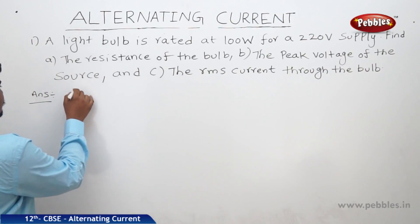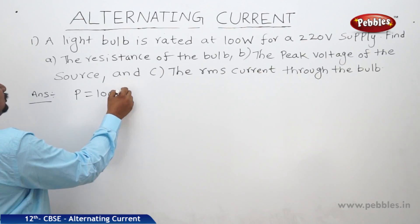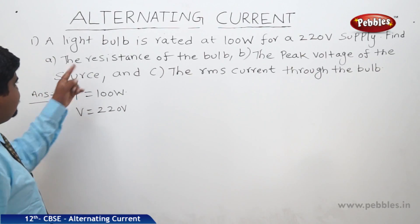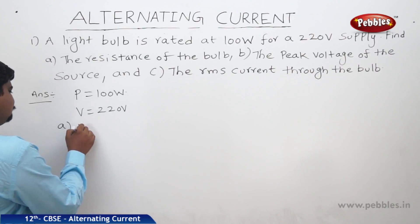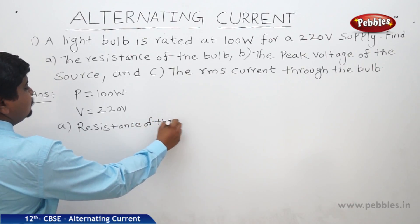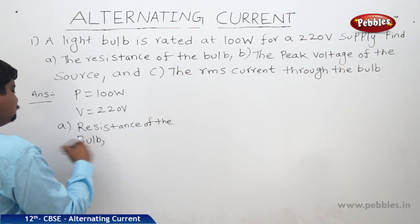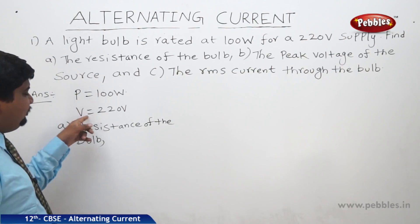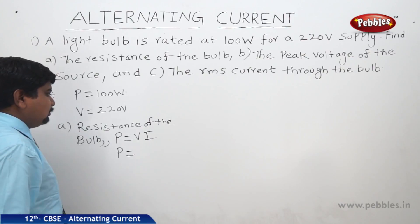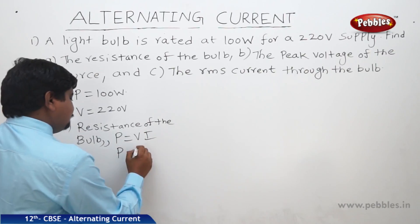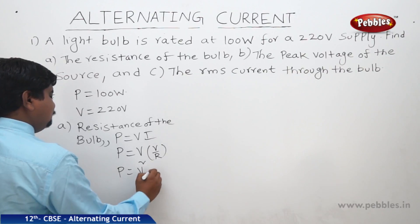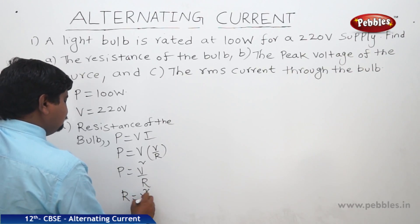The power is 100 watts and the voltage supply is 220 volts. For the first part, we find the resistance of the bulb. We know that P = VI, and substituting I = V/R, we get P = V²/R. Therefore R = V²/P.